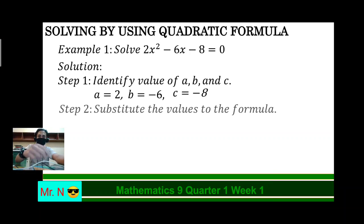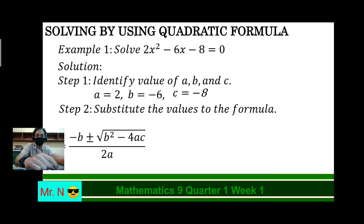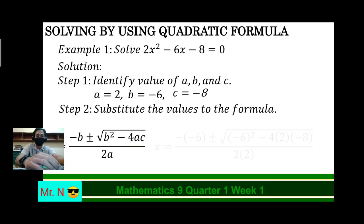Now, we're going to substitute the values into the formula. Using the formula, we're going to substitute negative B. B is equals to negative 6. A is equals to 2, and C is equals to negative 8. Over 2A, where A is equals to 2.